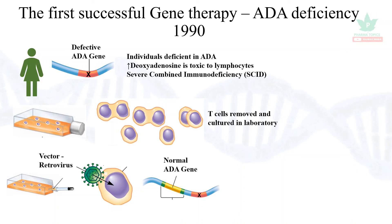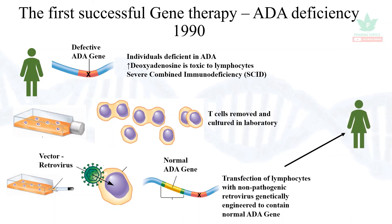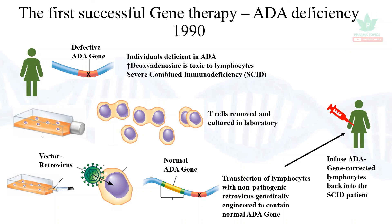The normal ADA gene is incorporated into the genome with the help of the virus and transfected into the lymphocytes, genetically modifying them to contain a normal ADA gene. The gene-corrected lymphocytes are then infused back into the patient. This was the first successful application of gene therapy in the year 1990. This has been a brief overview of gene therapy — I hope it will be useful for you.